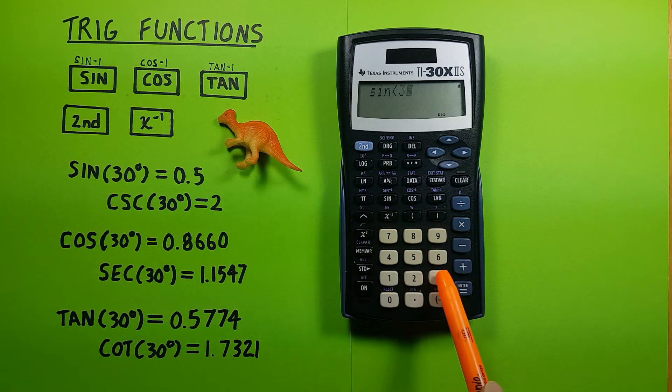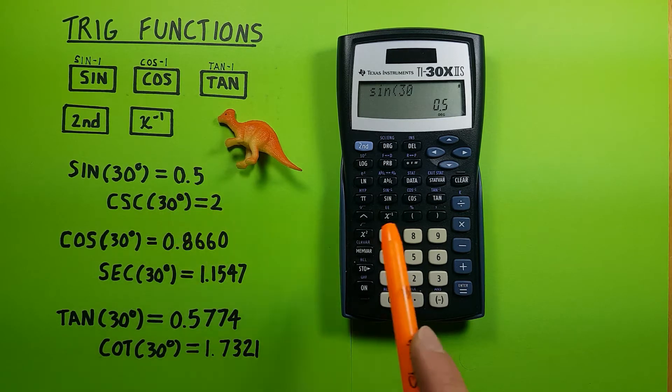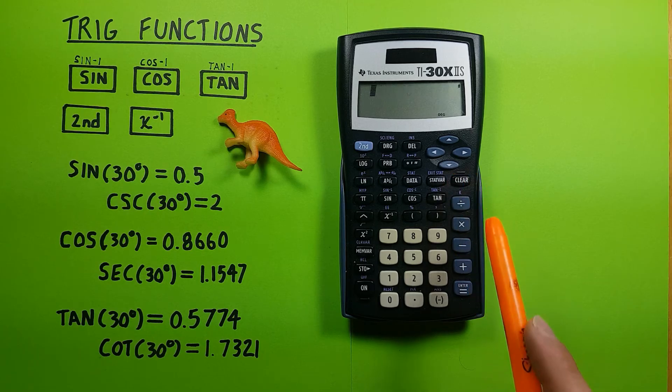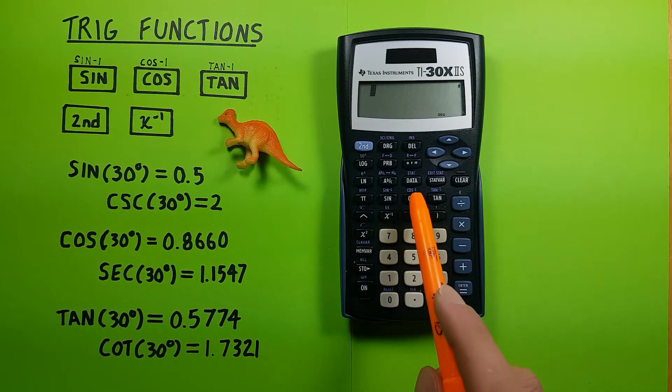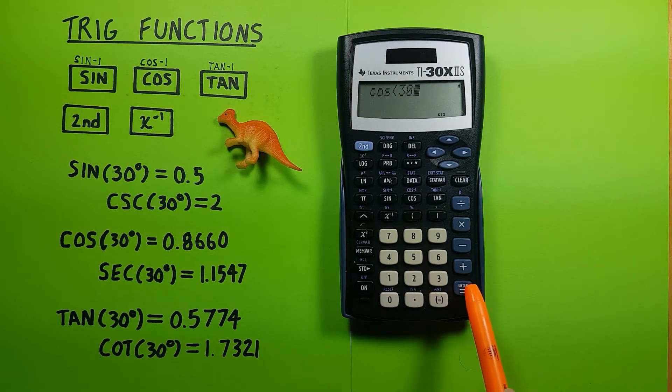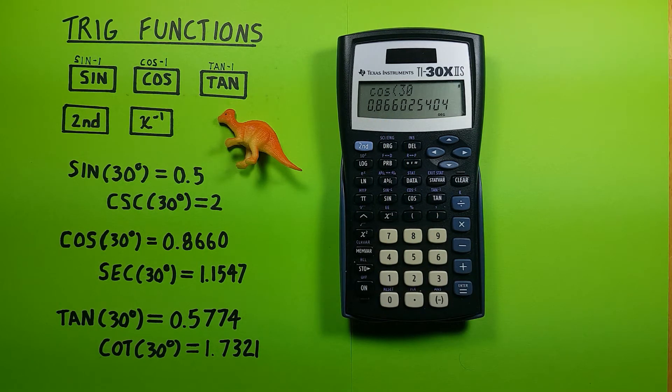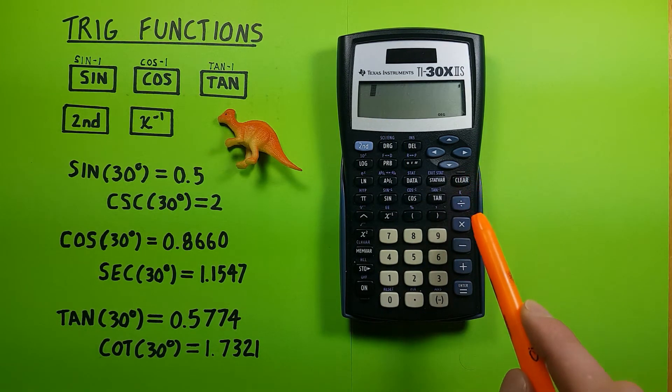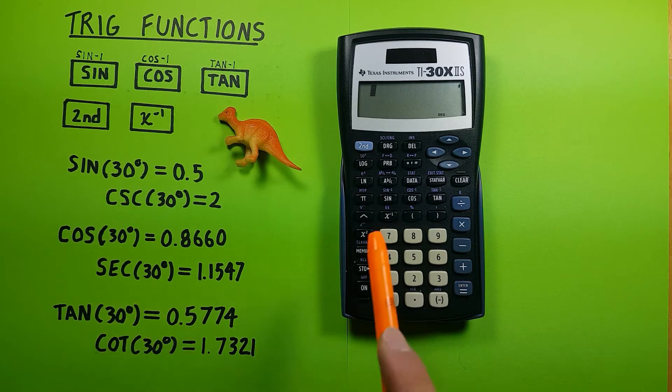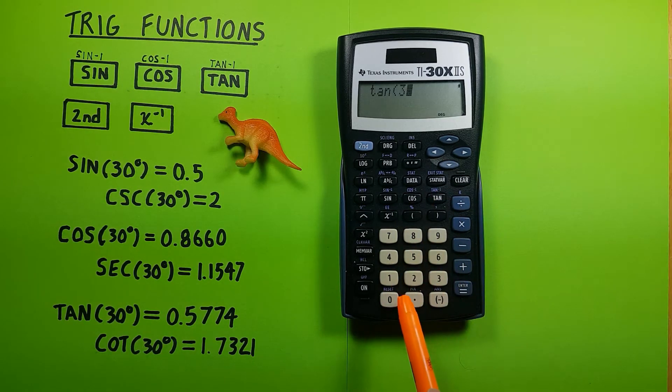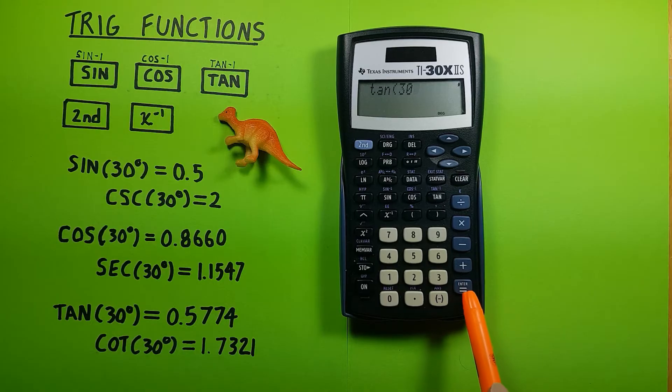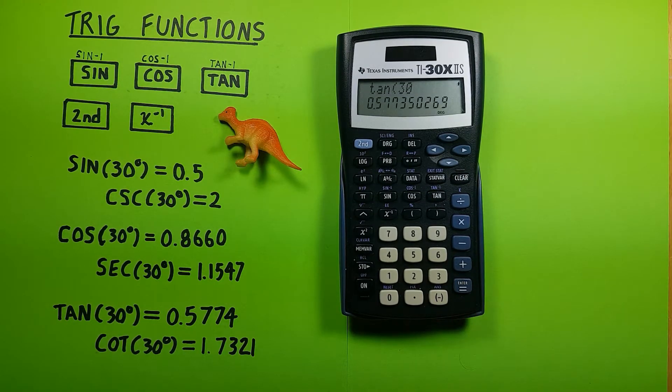So sine 30 equals 0.5, and cosine of 30 equals 0.8660, and the tan of 30 equals 0.5774 rounded.